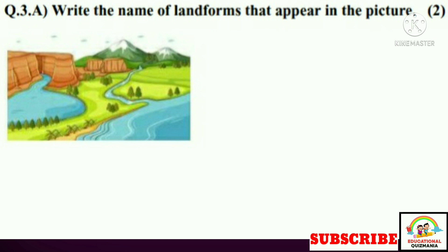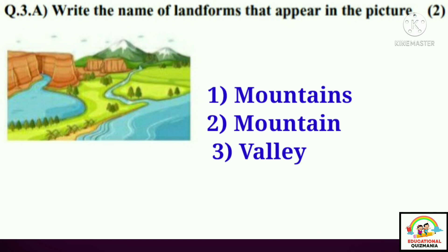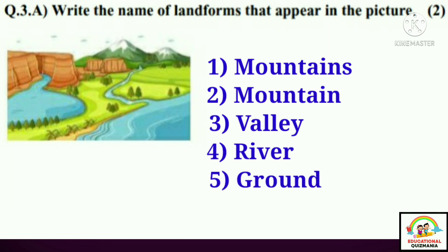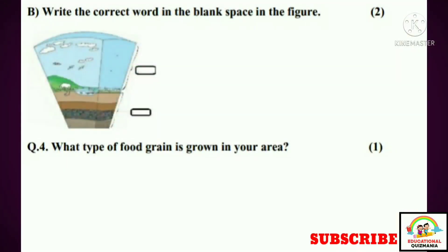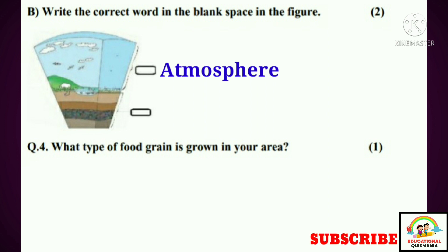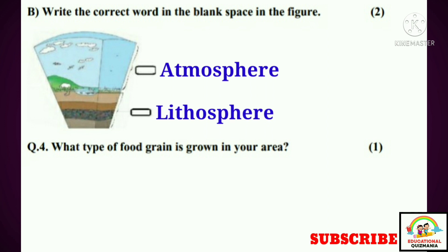Question three, part A: Write the names of plant forms that appear in the picture. Answer: mountains, valley, river, ground, etc. Part B: Write the correct word in the blank space in the figure. Answer: atmosphere and lithosphere.